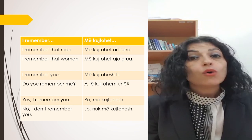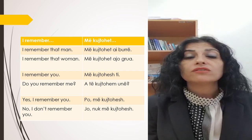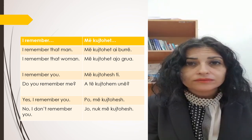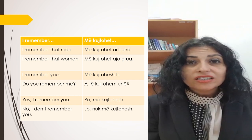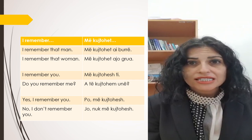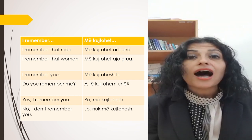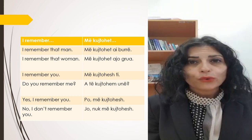Or, for example, if you want to say 'I remember that woman', in Albanian language you will say: 'më kujtohet ajo grua'.